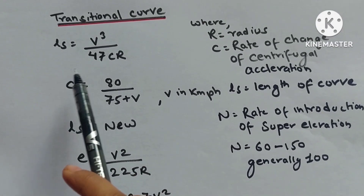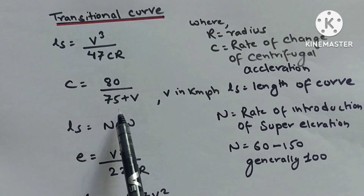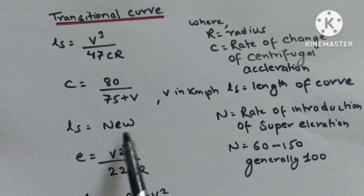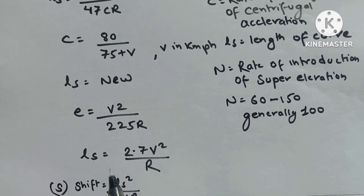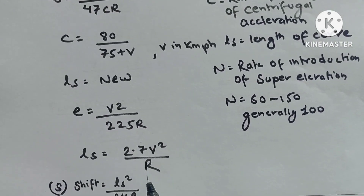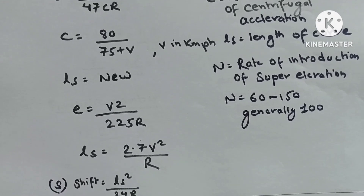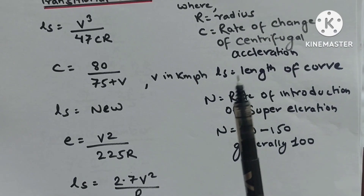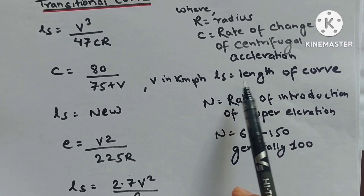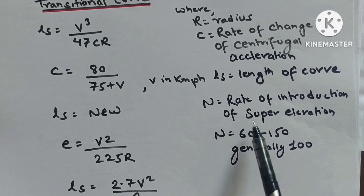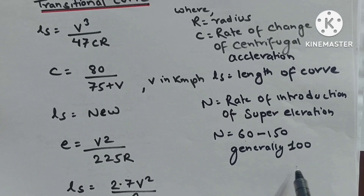Transition curve: Ls = V³/(47CR), where C = 80/(75 + V). Also Ls = nEW, E = V²/(225R), Ls = 2.7V²/R, and shift S = Ls²/(24R). Here R is radius, C is rate of change of centrifugal acceleration, E is rate of introduction of super elevation, and C generally ranges from 60 to 150, typically taken as 100.